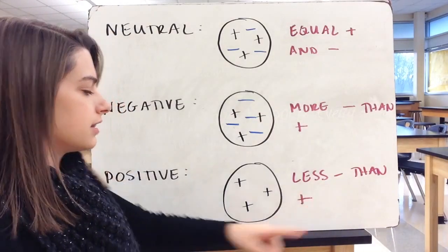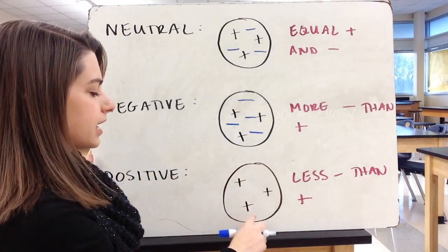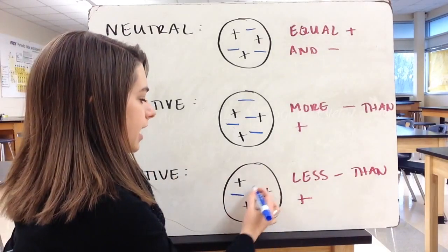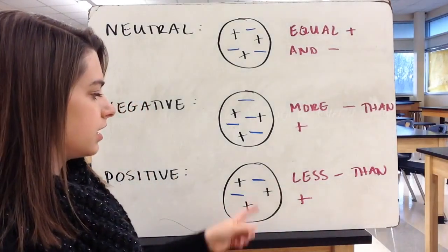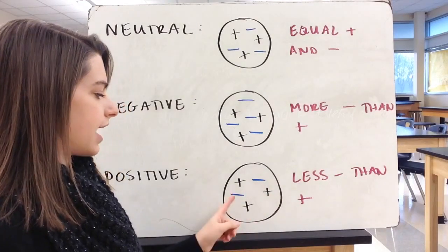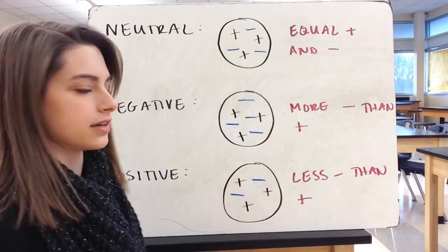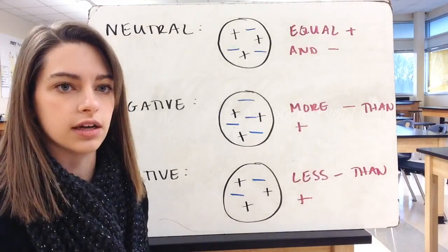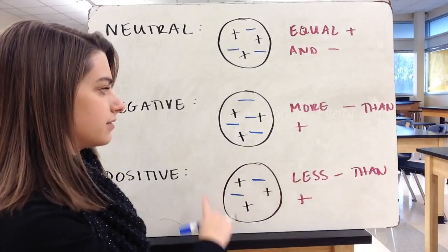If we want this to be positive, we need fewer negatives than the positives. So if I have three positives here, I could add just two negative charges. If I have positive 3 and negative 2, that gets me a positive 1 left over. So this is a positive atom.